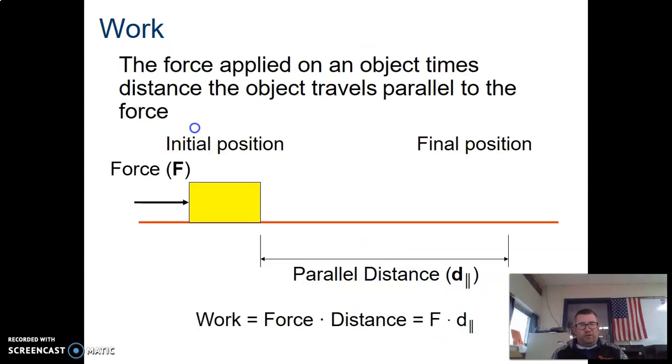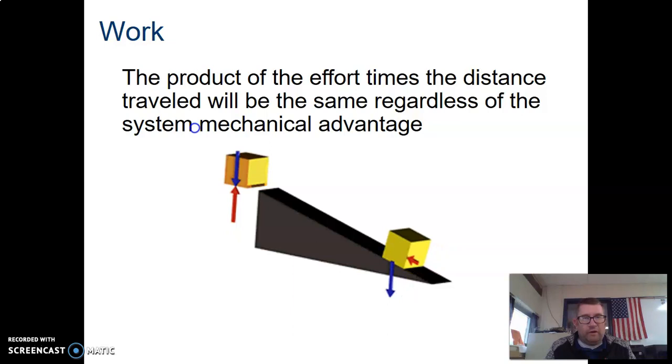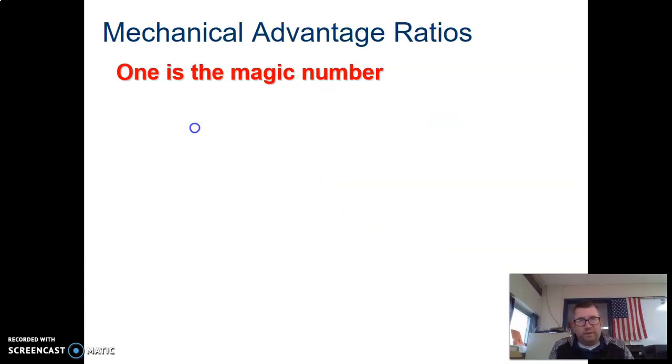Then we come to the concept of work. Work is the force applied on an object times the distance the object travels parallel to the force, or work equals force times distance. If I apply a 20 pound force over 10 feet, then I'm creating 200 foot pounds of force. As the animation shows, work is the product of the effort times the distance traveled, so that's going to be the same regardless of the mechanical advantage.